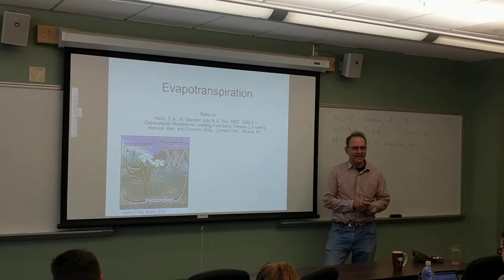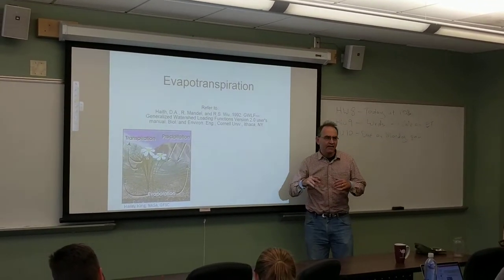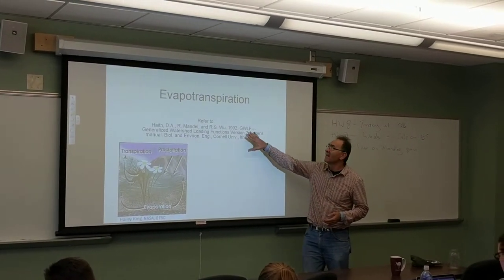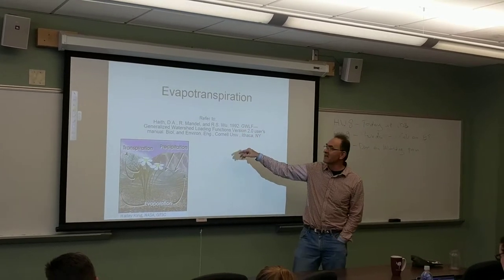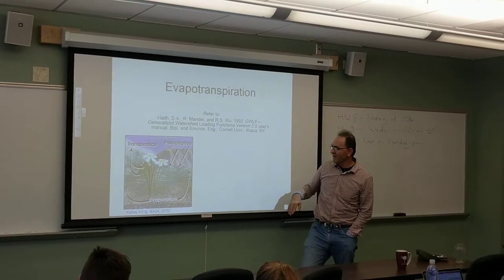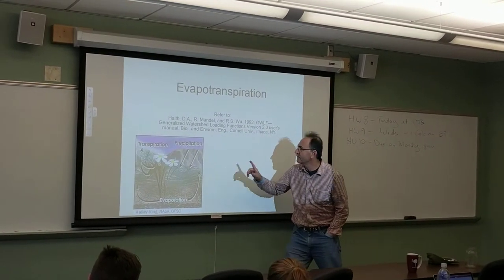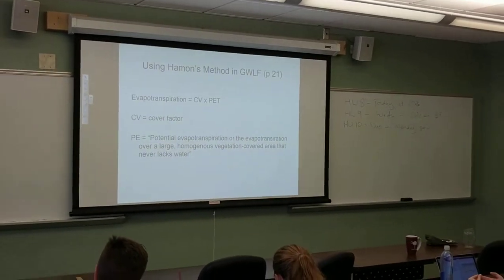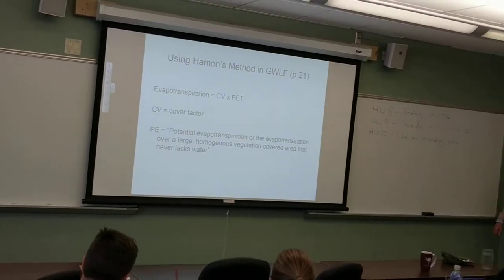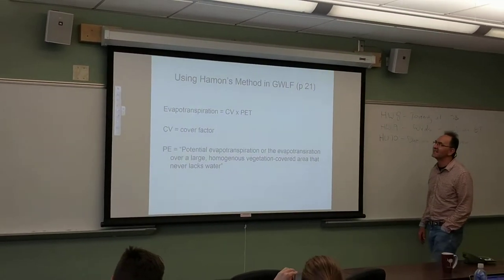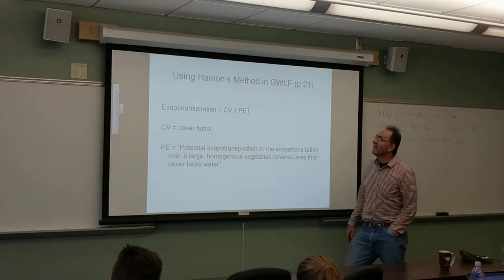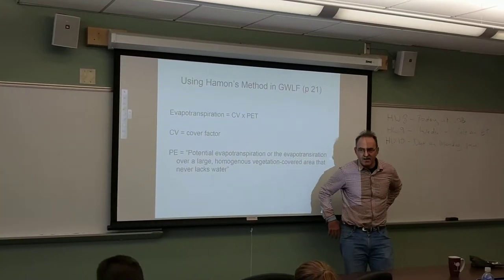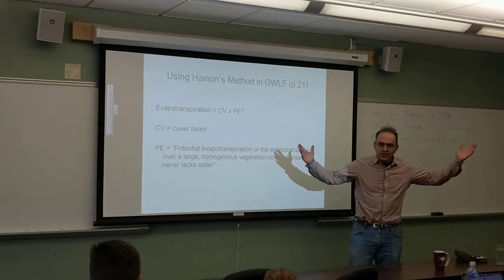The model uses the SCS curve number for rainfall and runoff, and evapotranspiration is taken from a guy called Heyman, who wrote a paper around 1961. And really, evapotranspiration raises the whole question: when is evapotranspiration going to be highest?